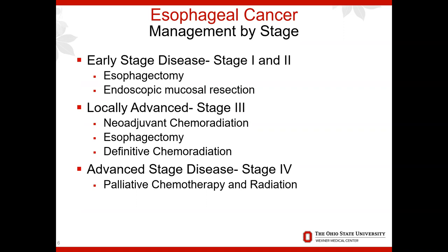For patients who cannot tolerate surgery, a second option is definitive chemoradiation, where patients are treated primarily with chemotherapy and concurrent radiation. For patients with advanced esophageal cancer, stage 4, they are treated with palliative chemotherapy and radiation.